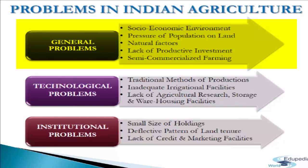The fourth problem is lack of productive investment. There is almost an absence of productive investment in Indian agriculture, as investment in land is considered less remunerative compared to alternative investments in other sectors. The last general problem is semi-commercialized farming. Agriculture in India is neither fully commercialized — i.e., production meant for sale — nor fully subsistence farming — i.e., production for self-consumption only — but rather a mixture of both, which adversely affects agricultural productivity.